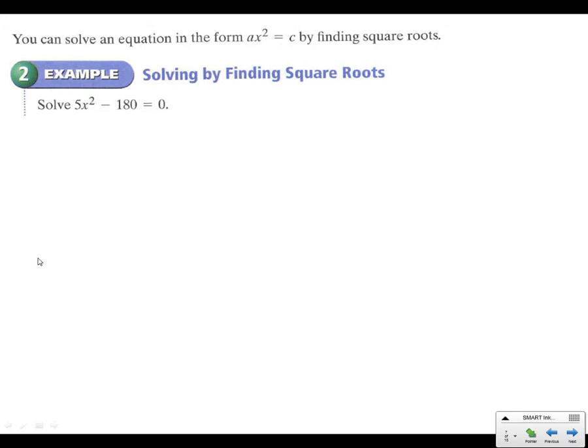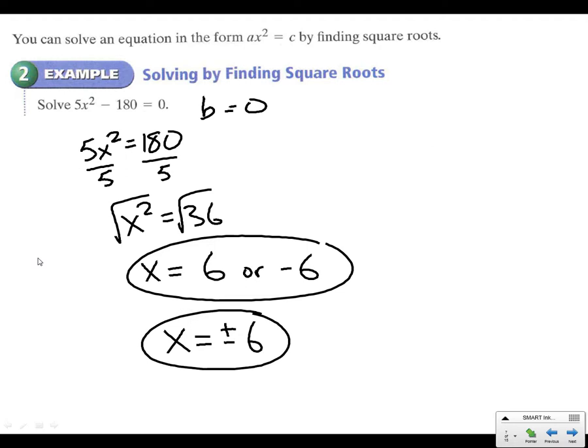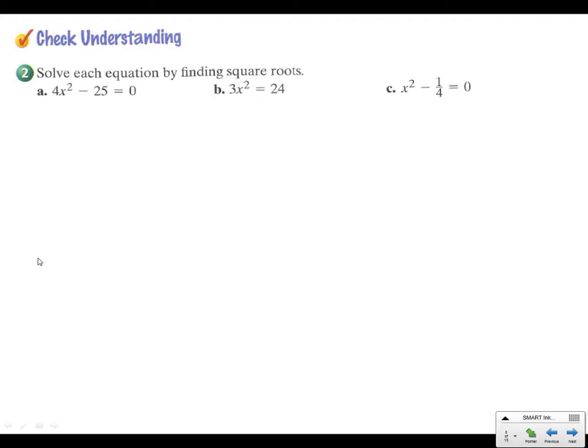Now we actually get the easier one second. You'll notice here that if we don't have b, b equals 0, we just have an x squared and a number. We can move the 180 to the other side. We can divide by 5, and let's see, what is that? That's going to be 36. Then we can take our square root of both sides, and we get straight to our answer. Don't make the mistake of just saying 6. Remember, it's 6 or negative 6. Remember that square roots can have a plus or a minus on them. So we can also write it like this: x equals plus or minus 6. That means the exact same thing. See if you can use your square root skills to get a, b, and c for understanding check number 2.